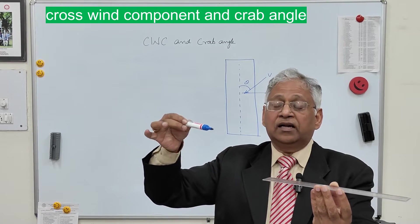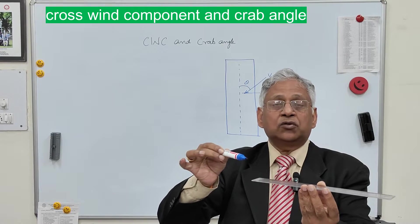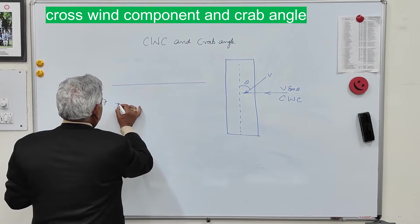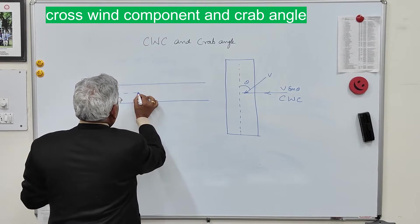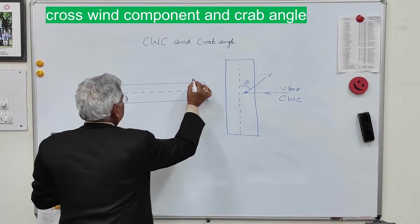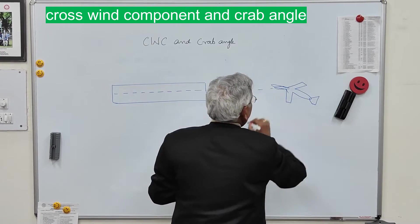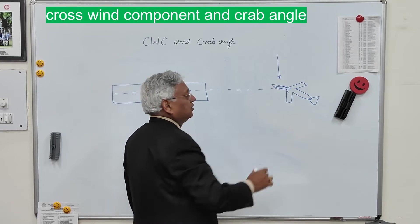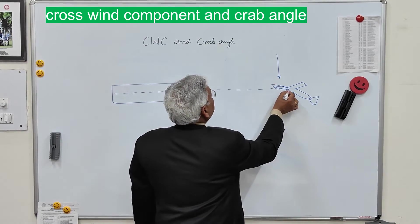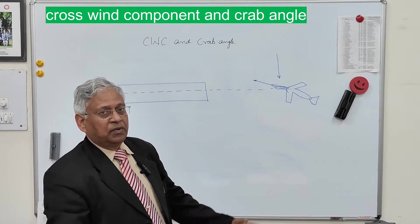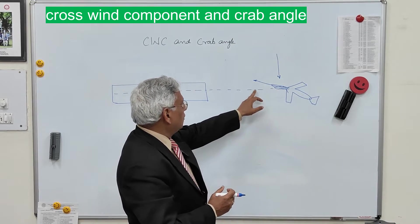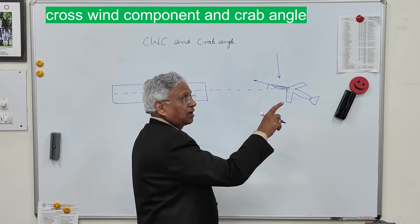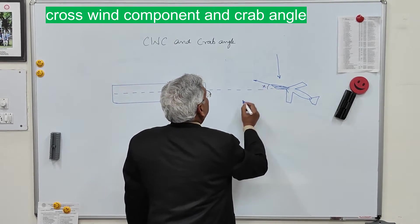The aircraft will not land straight; it will start landing at an angle just to counter the effect of the crosswind component. If there is a strong wind from one side, the nose of the aircraft will point into the wind, but the actual path of the aircraft will be along the extended center line of the runway. This angle that the nose of the aircraft makes with the center line is called the crab angle.